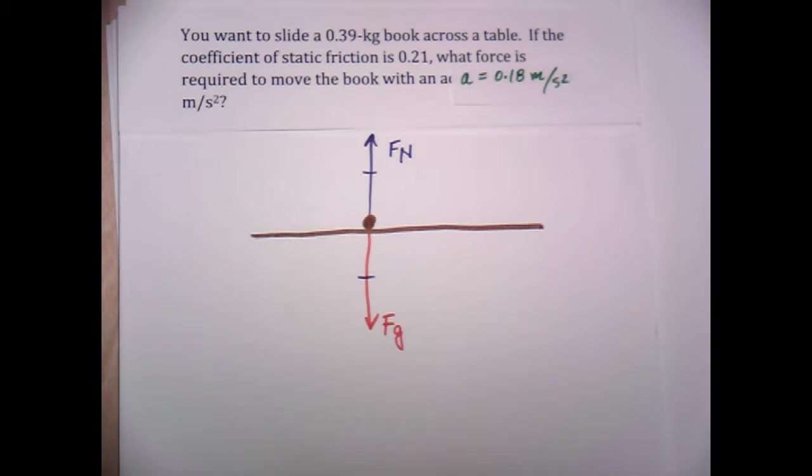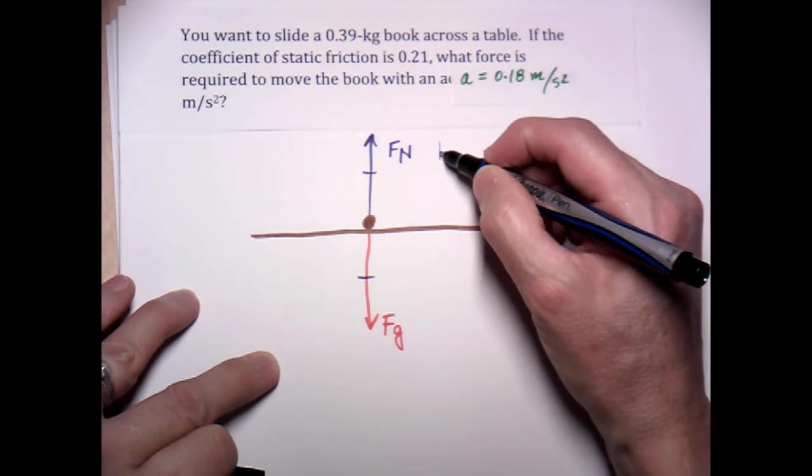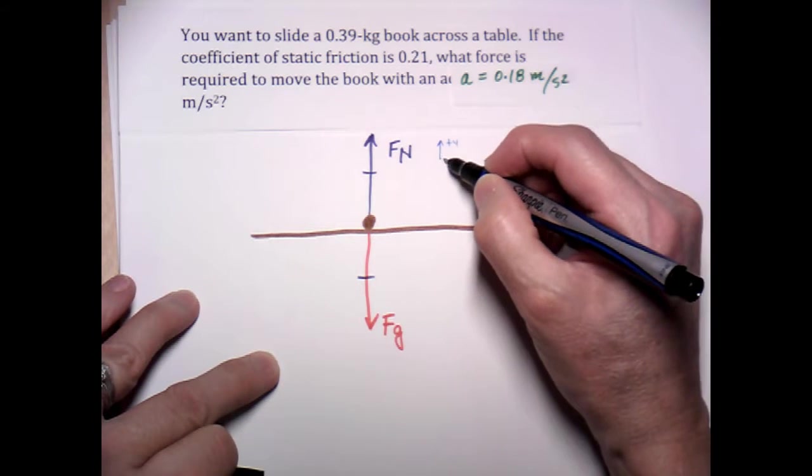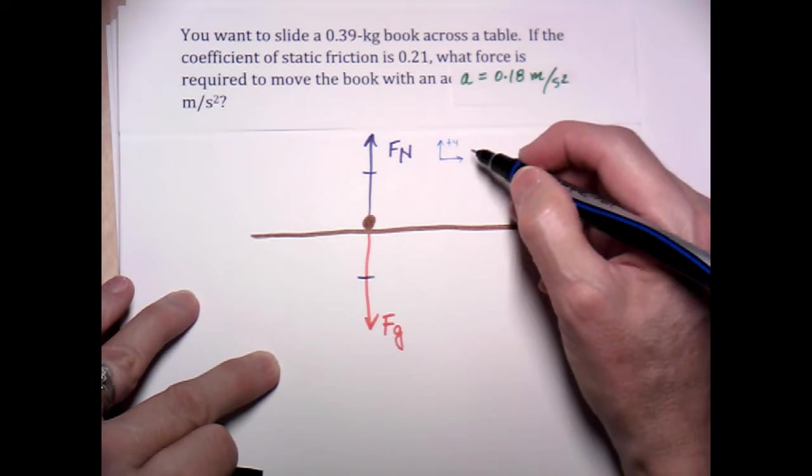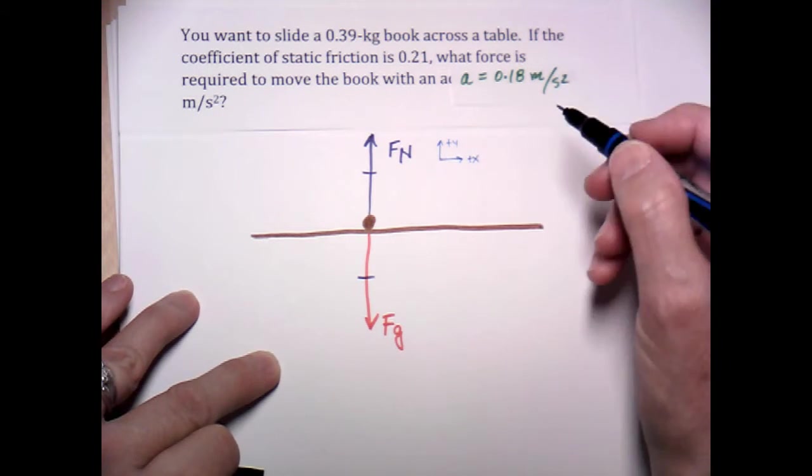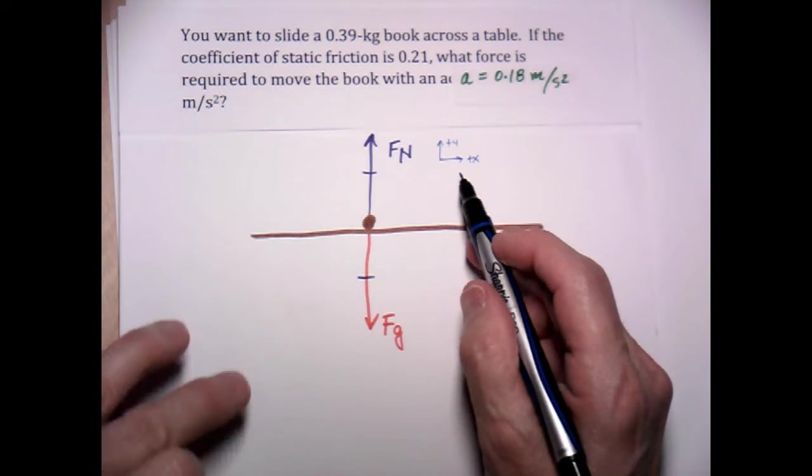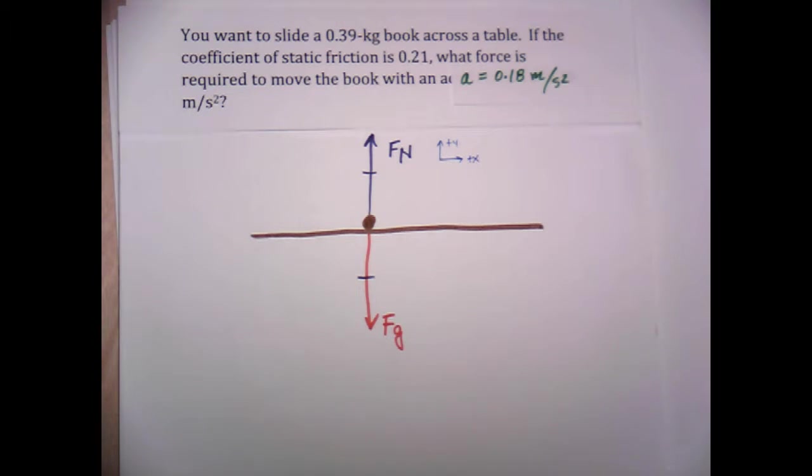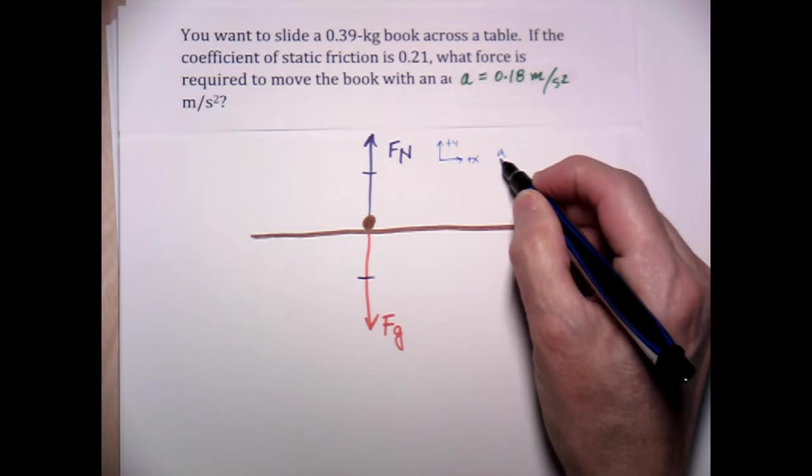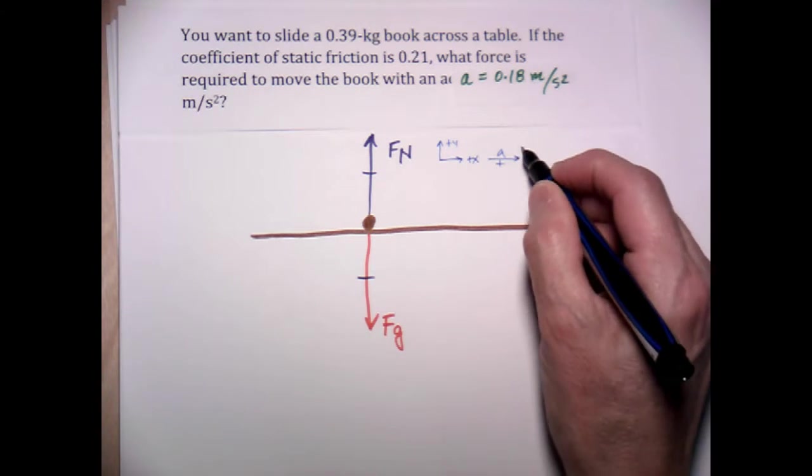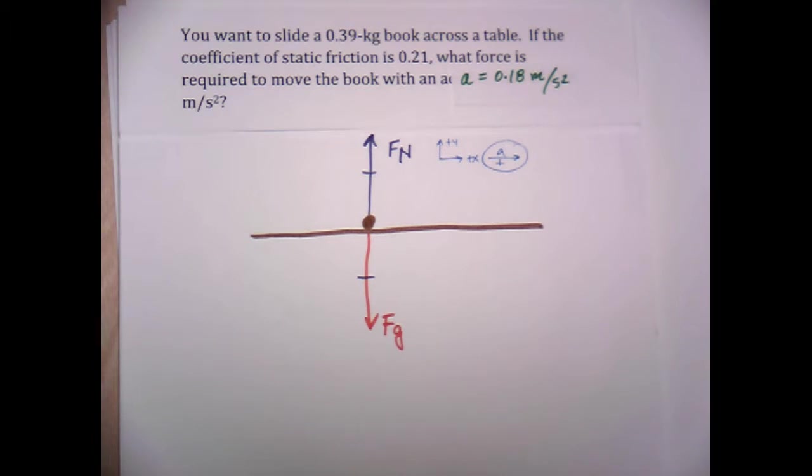So before I go any further, I'm going to label my directions. I'm going to say up is positive Y. And to the right, I'll have this thing accelerate to the positive X direction, which I'll just go ahead and decide is to the right. So if the book is going to be accelerating, we need to label the direction of acceleration as being acceleration positive in this direction.